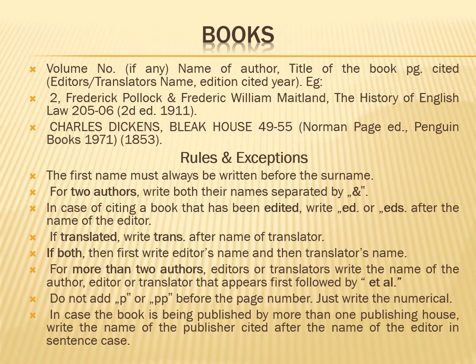If the book is translated, always write 'trans.' If it is both edited and translated, first write the editor's name and then the translator's name. For more than two authors, write the name of the author, then editor or translator that appears first, followed by 'et al.' Do not add 'p' or 'pp' before the page numbers. For example, if it is from page 2 to 5, simply write 2–5.